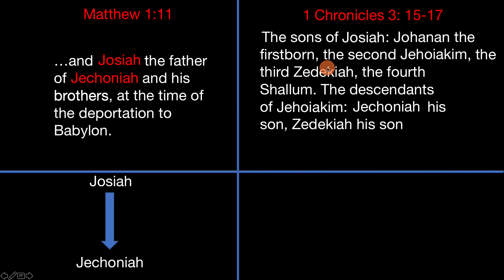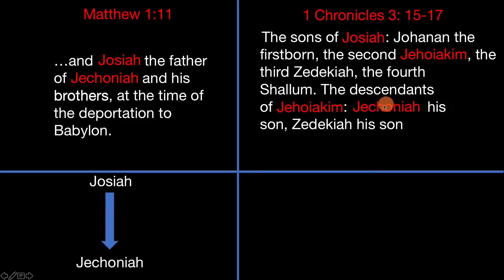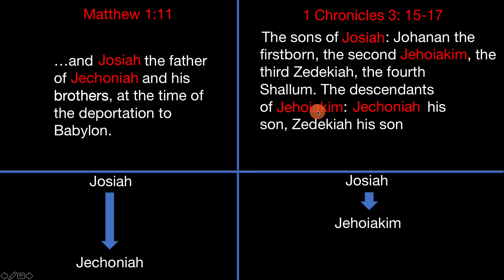Now let's go to 1 Chronicles 3:15, which reads: 'The sons of Josiah were Jehoiakim the firstborn, the second Jehoiakim, the third Zedekiah, the fourth Shalom. The descendants of Jehoiakim were Jeconiah, and Jeconiah his son, Zedekiah.' So we're told that Jehoiakim was one of Josiah's sons, and Jehoiakim had two sons, one of which was Jeconiah. It's very clear that Matthew has skipped the name Jehoiakim in his genealogy.